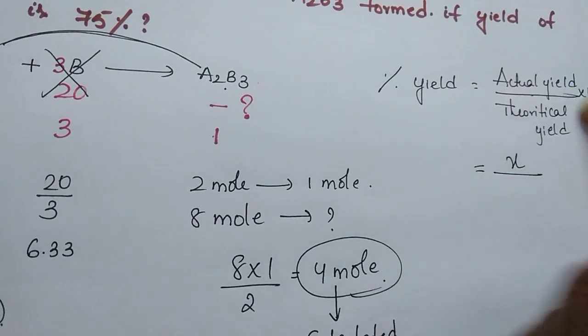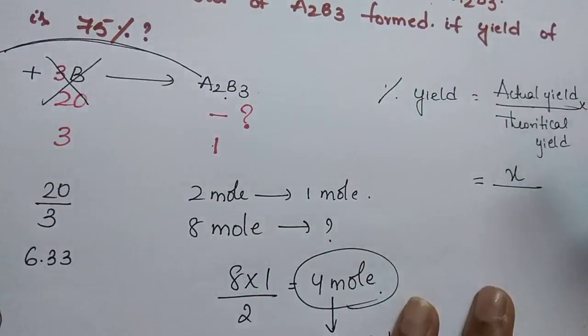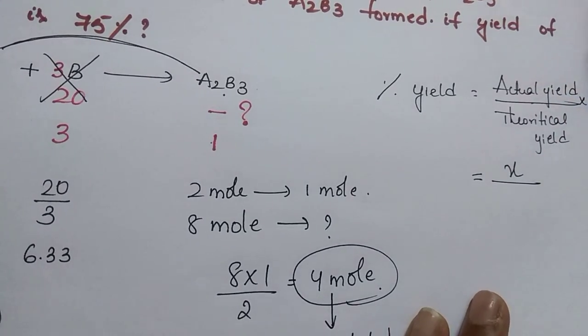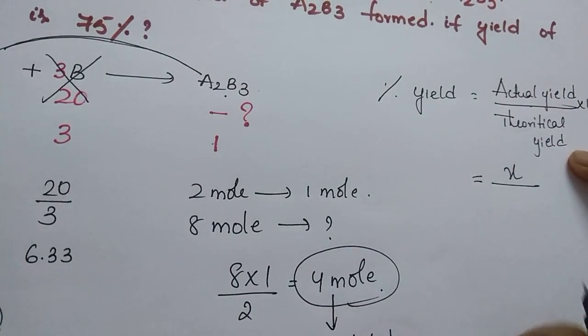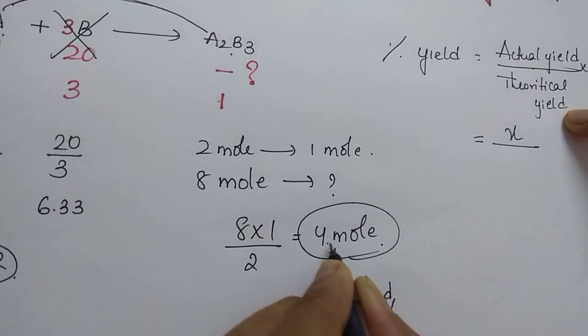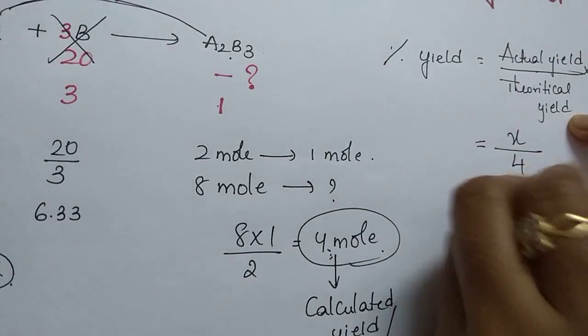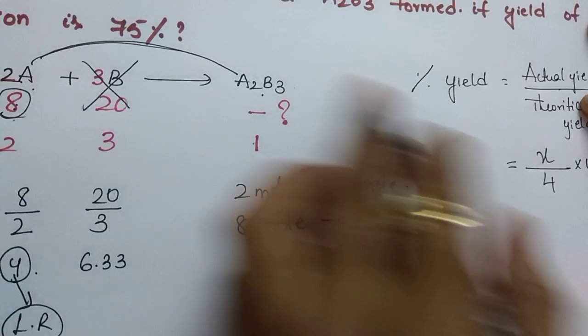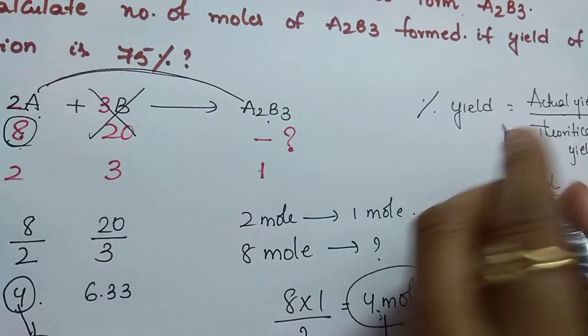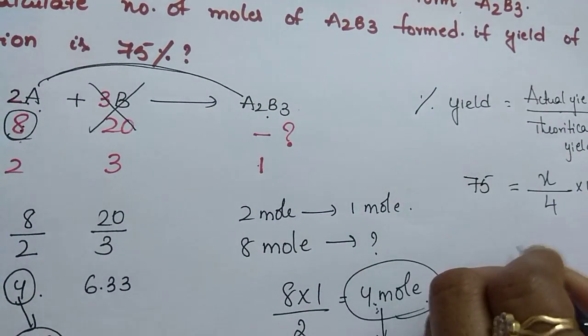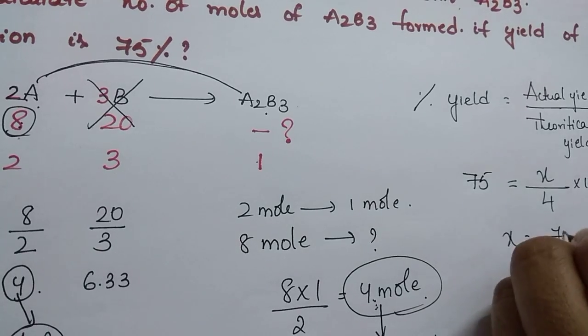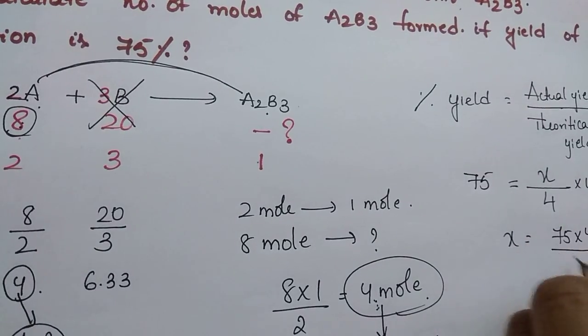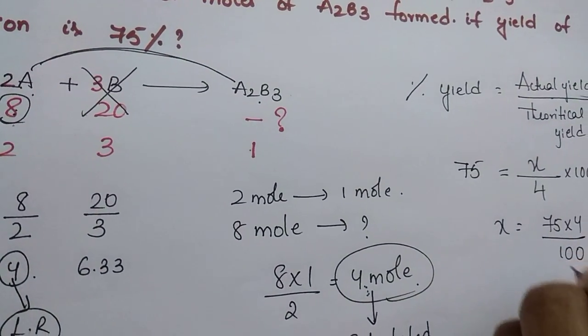Actual yield means how many moles of product we are getting. The theoretical yield is 4 moles. So 75 equals x divided by 4 times 100. Substituting, x equals 75 times 4 divided by 100. This is your answer.